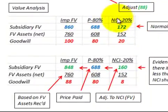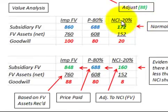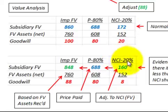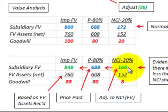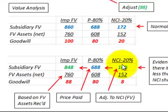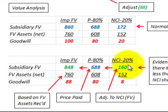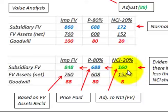Looking at our adjustment for the non-controlling interest: there's evidence that the implied fair value of the non-controlling interest of $172,000 exceeds the real value it should be receiving, and we're estimating it to be $160,000. So we originally had $172,000, now we have $160,000. It must be pointed out that you can never adjust this portion below its share of the fair value of the net assets — we can never go below $152,000 in this case.